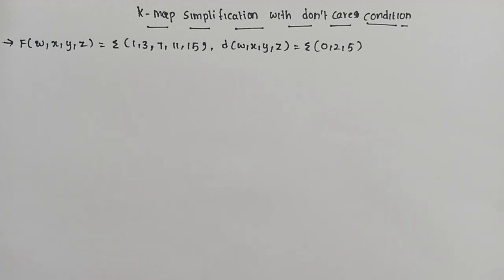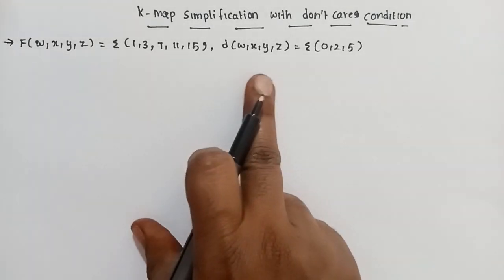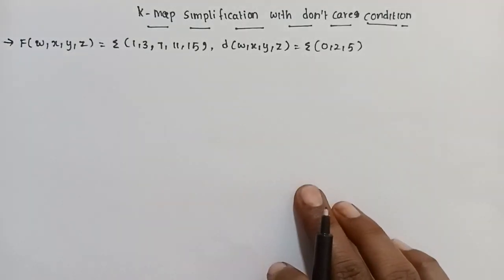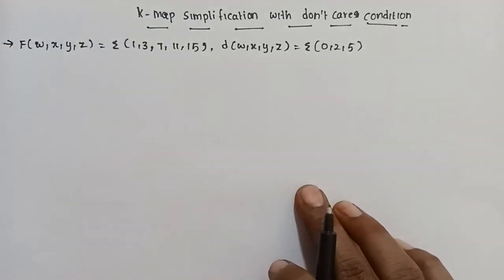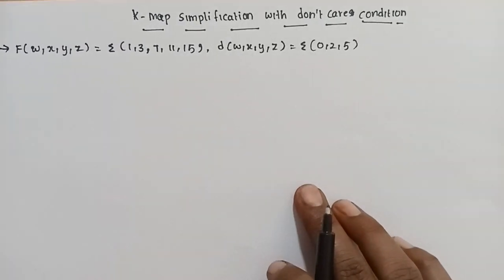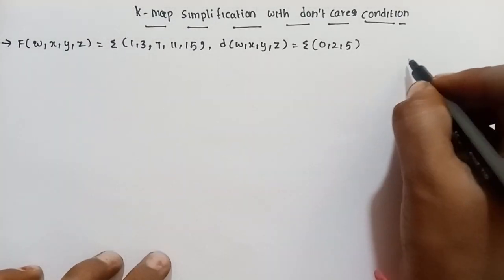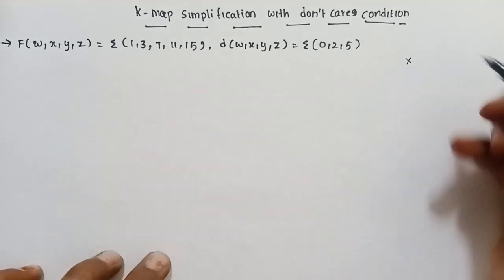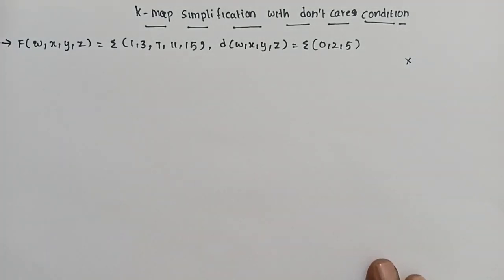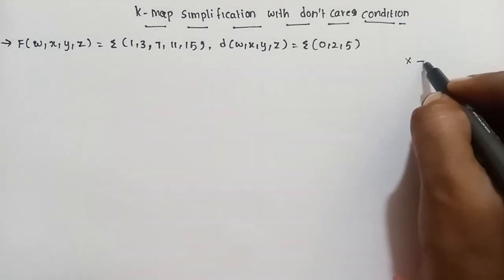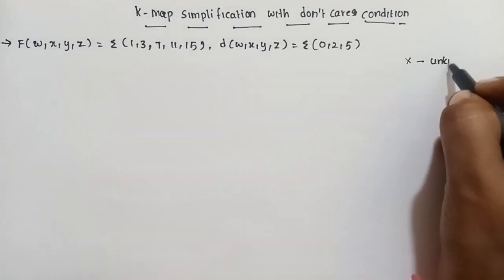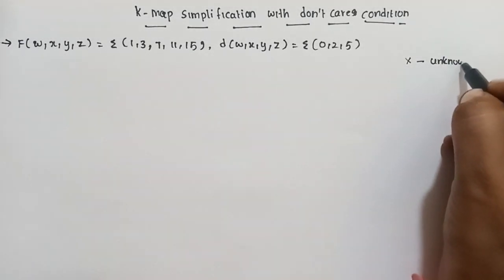We have K-map simplification with don't care. Don't care is simplified and represented by the symbol X. Don't care has a value of 0 or 1 — it is an unknown value. This symbol X represents an unknown.